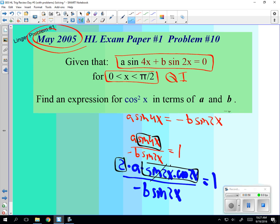Cancels out, yeah. These are all multiplied, so we can cancel these out. So you get 2a cos 2x over negative b equals 1.